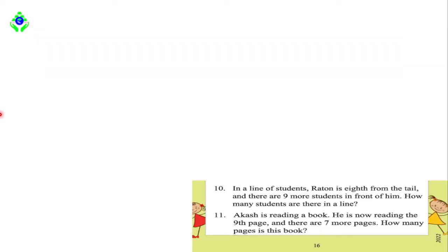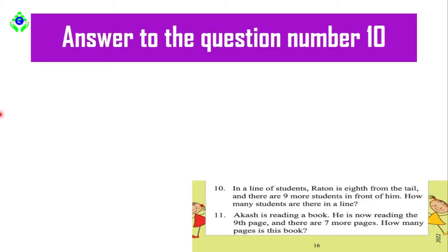Now let's solve question number 10. The data mentioned in the question: Raton is eighth from the tail — so the number eight appears — and there are nine more students in front of him. So eight and nine are the key values mentioned in question number 10.